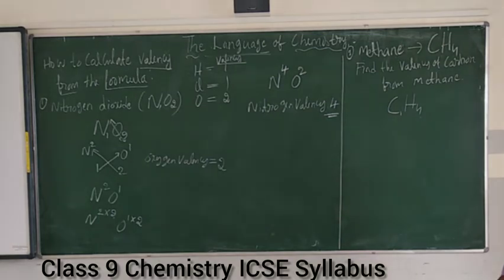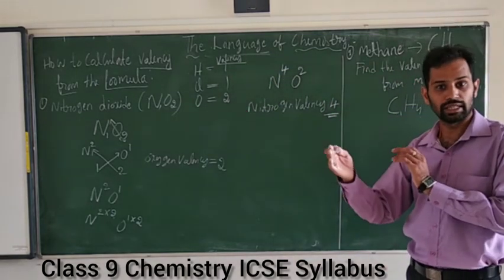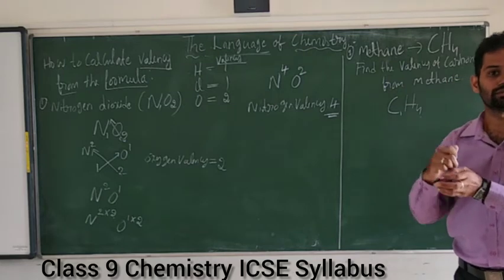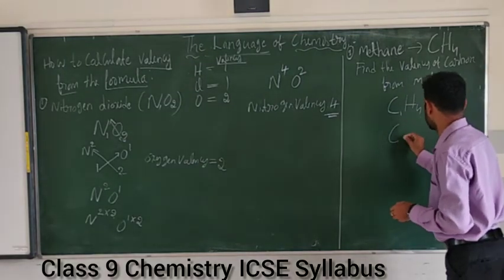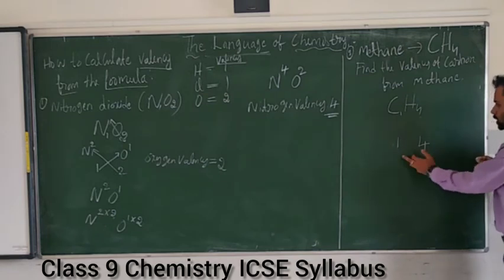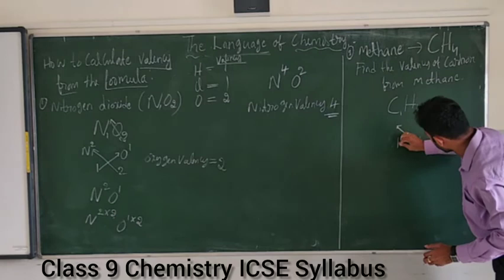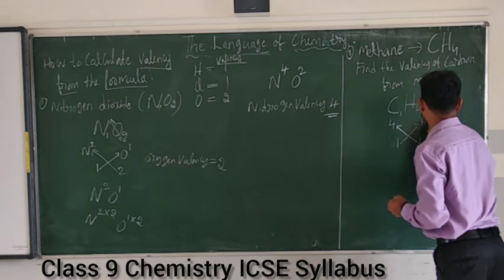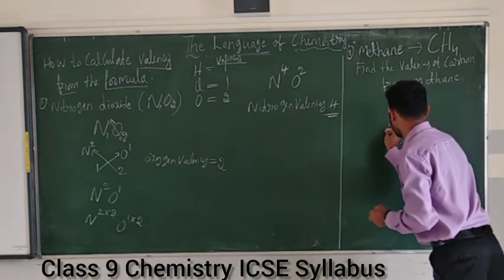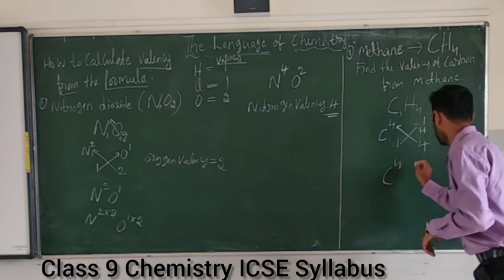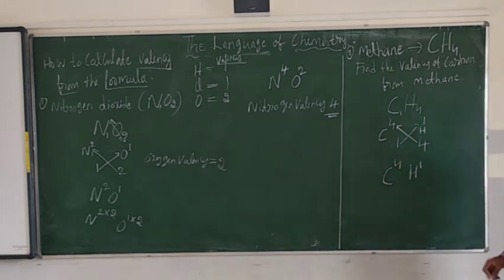Next step: subscripts are changed into superscripts by cross multiplication. After cross multiplication, C gets superscript 4 and S (hydrogen) gets superscript 1. We know hydrogen valency is always 1.